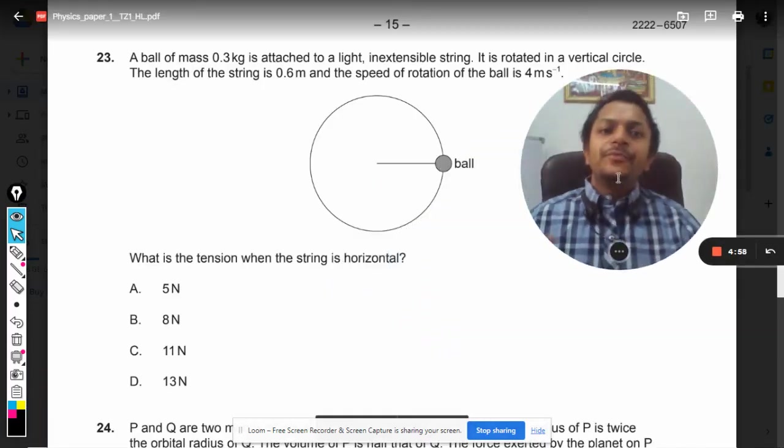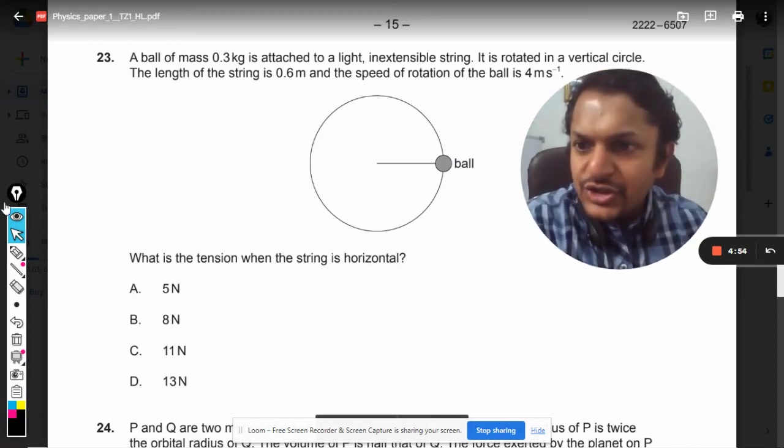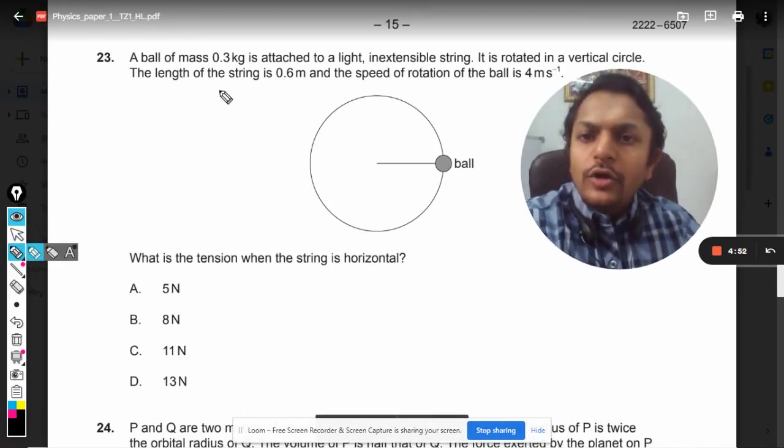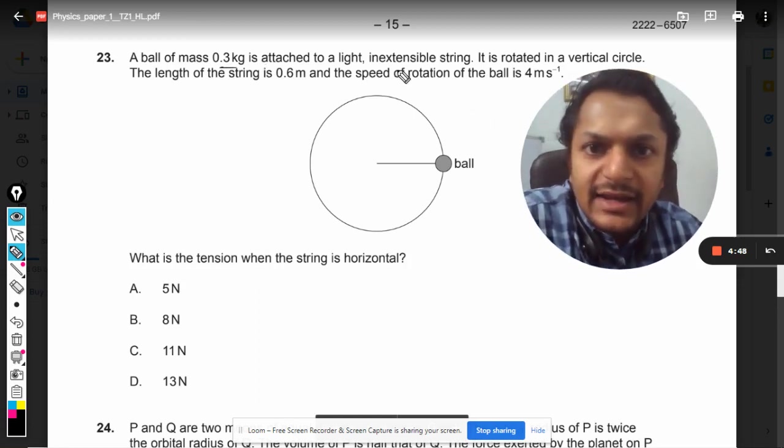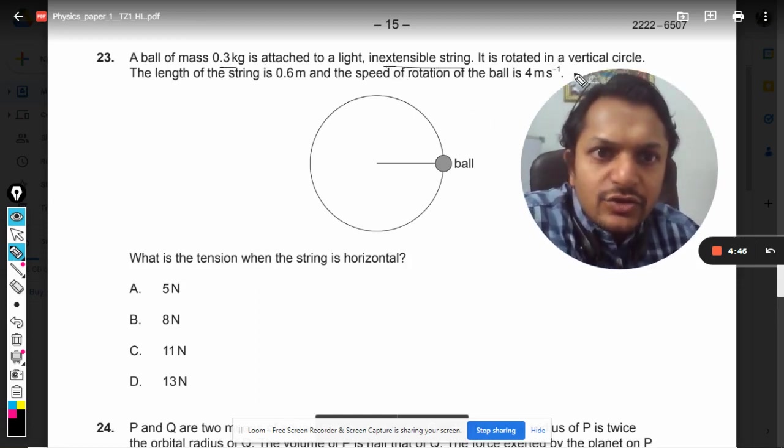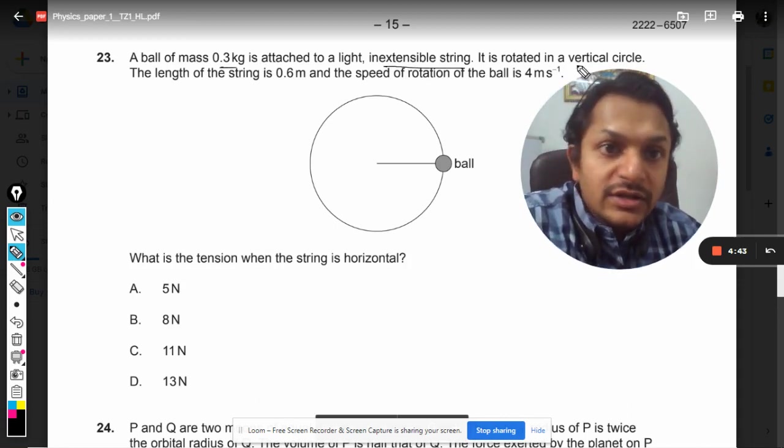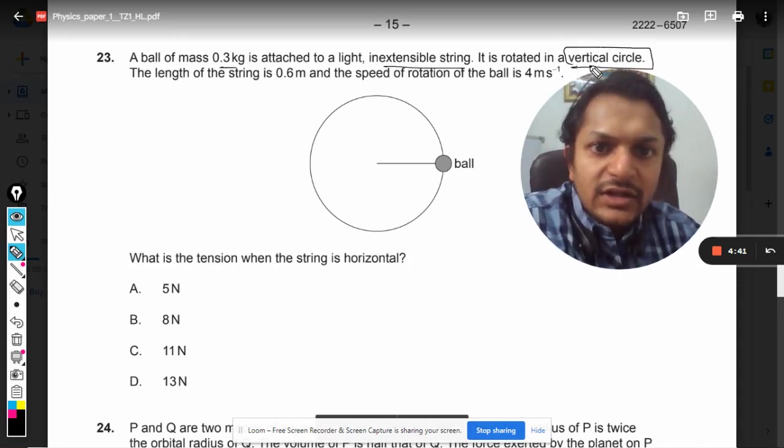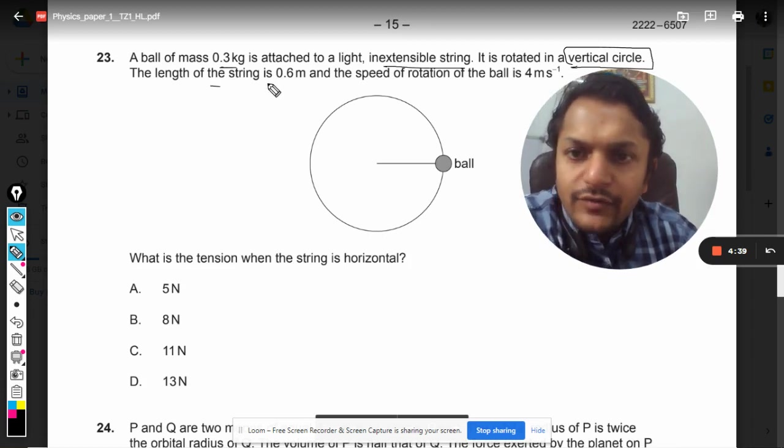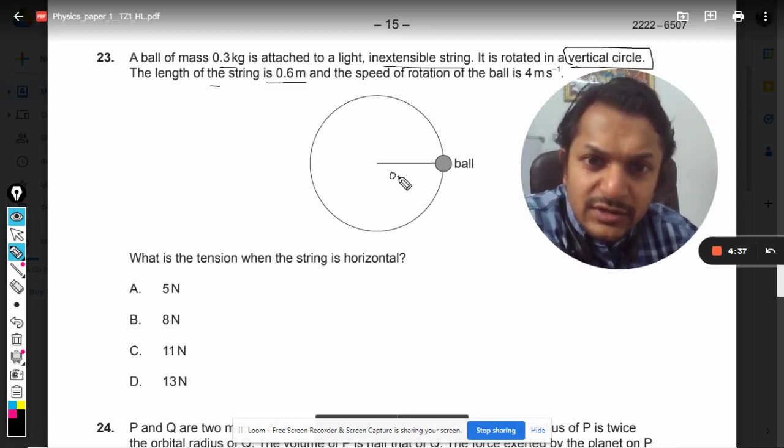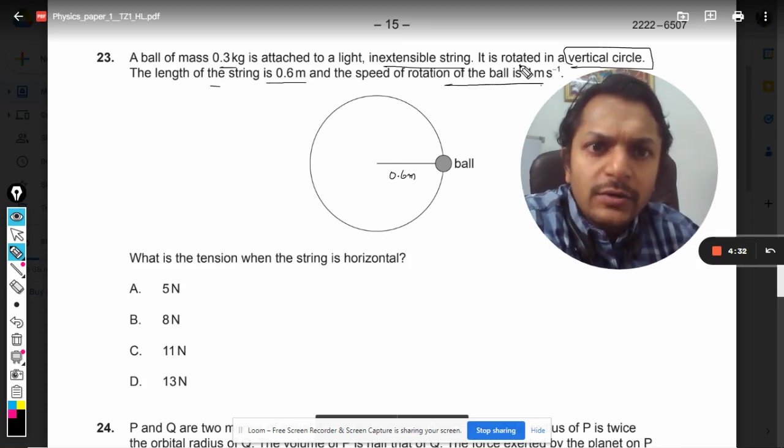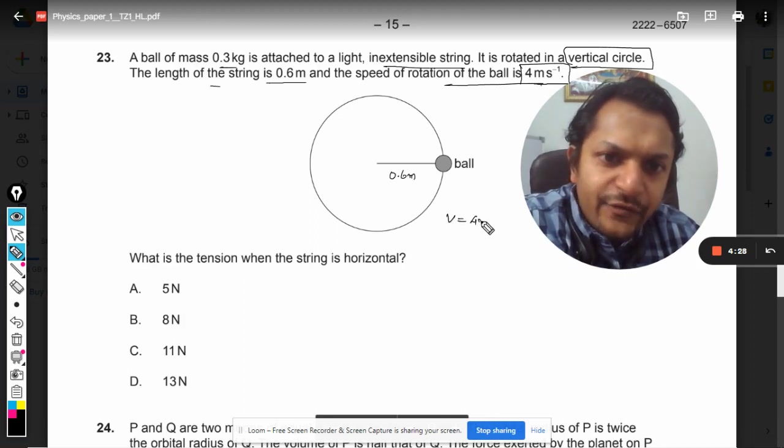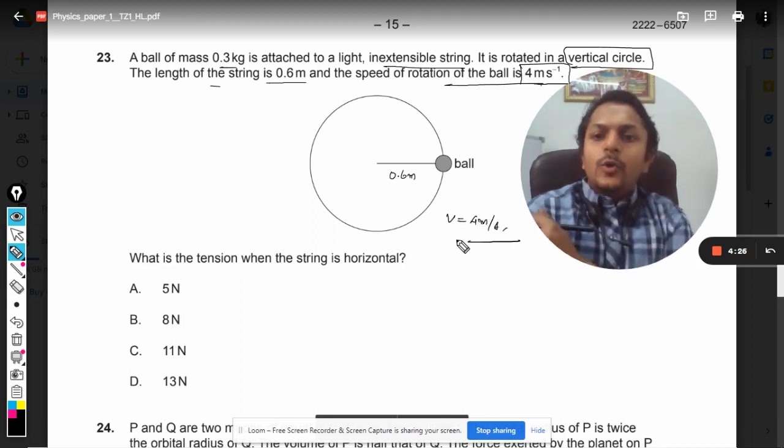Okay dear students, let's see what is in this question. A ball of mass 0.3 kg is attached to a light, inextensible string. It is rotated in a vertical circle. The length of the string is 0.6 meter, and the speed of rotation of the ball is 4 meter per second. What is the tension when the string is horizontal?